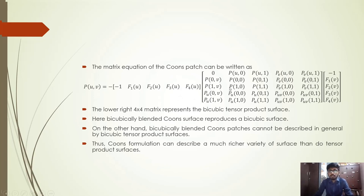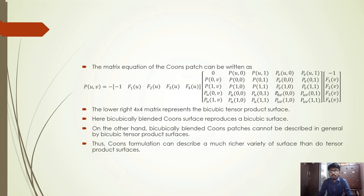Looking at this equation, the lower-right 4×4 matrix represents the bicubic tensor product surface. The bicubically blended Coons surface can reproduce bicubic surfaces — that is, a bicubic surface can be represented using this equation. However, on the other hand, a bicubically blended Coons patch cannot in general be described by a bicubic tensor product surface. Hence, a much richer variety of surfaces can be obtained using the bicubically blended Coons surface patch. That is the overview of Coons surface. Thank you.